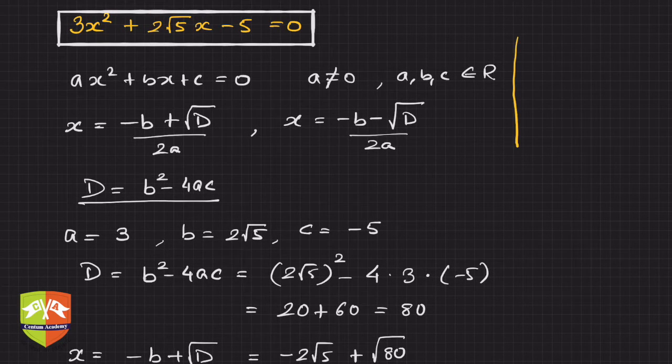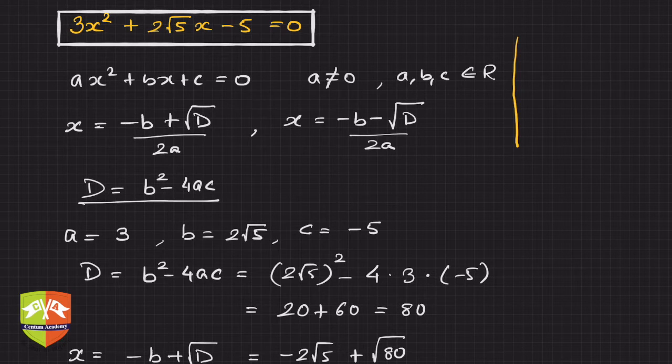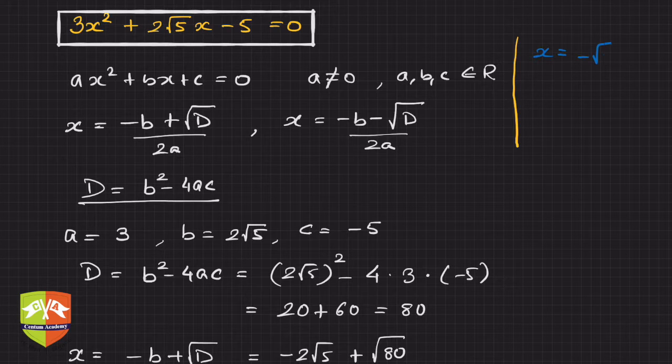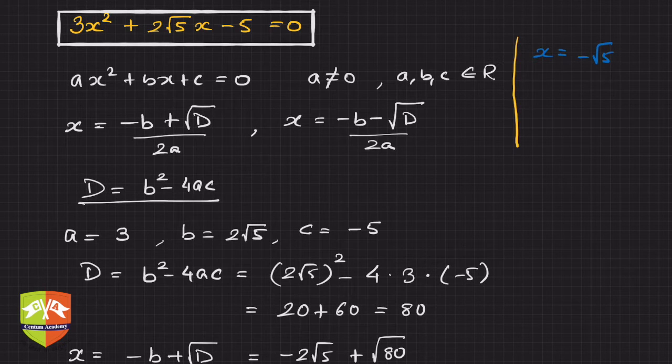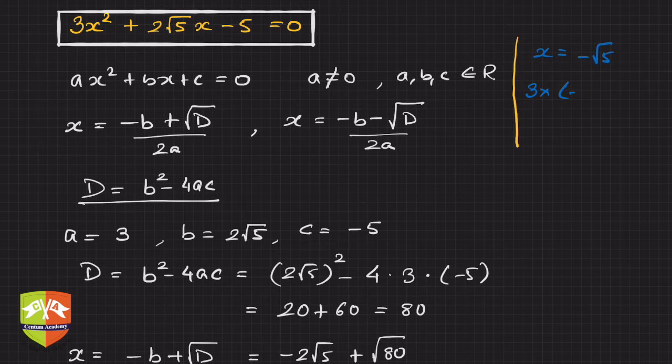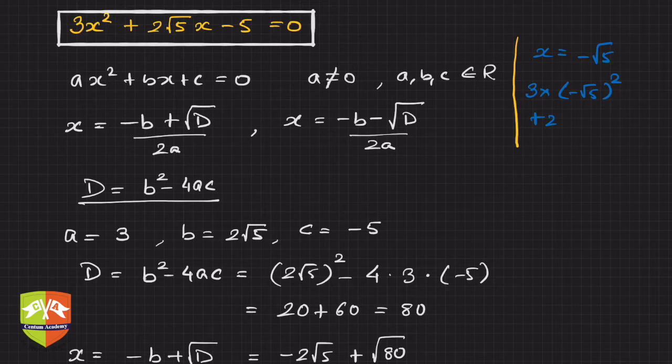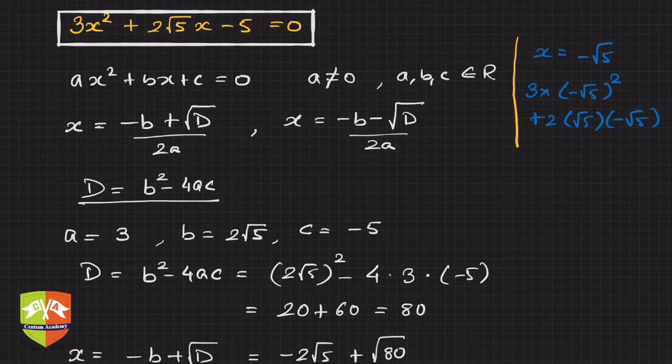The equation is 3x² + 2√5x - 5. Let's check: we got one solution x = -√5. Let's verify this. Deploy instead of x, put -√5. So 3(-√5)² + 2√5(-√5) - 5.